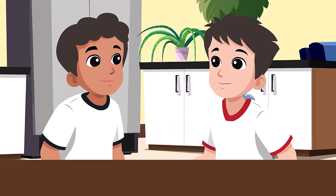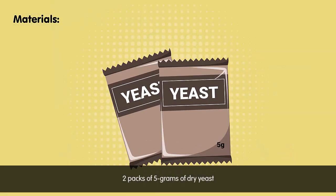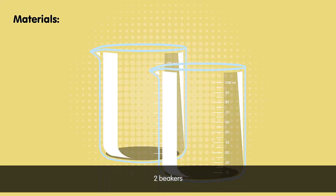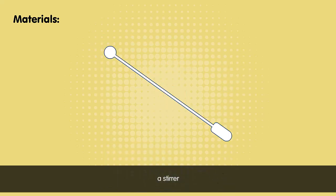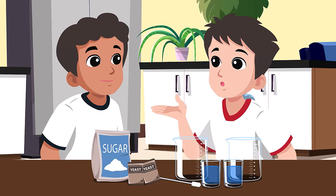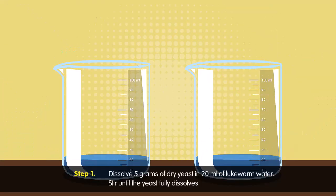In this experiment, we will need two packs of 5 grams of dry yeast, 20 milliliters of lukewarm water, two beakers, a stirrer, and sugar. We now have all the materials. What do I need to do first?